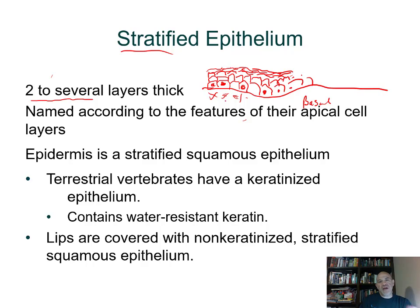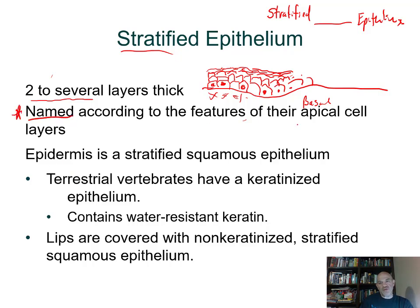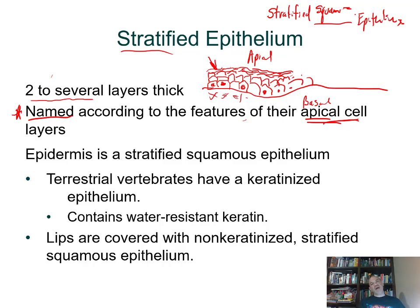The apical cells are flat or squamous in shape, so this is called stratified squamous epithelium. Your skin is a stratified squamous epithelium, as is the lining of your mouth and esophagus, where surface cells get rubbed off and are constantly replaced by deeper cells dividing and pushing the older cells upward.